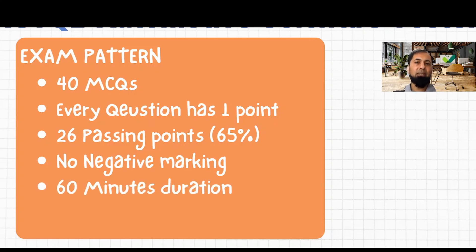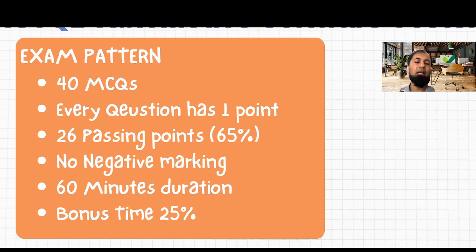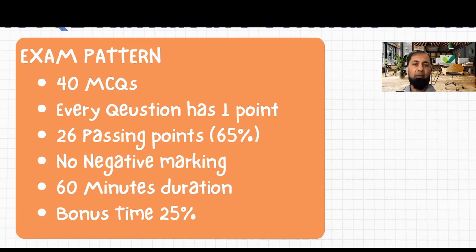The duration of the examination is 60 minutes, so you have to solve 40 MCQs in 60 minutes. However, there is a bonus 25% extra time if you select an examination language other than your native language. In my case, I got this bonus because I am not a native English speaker, giving me 75 minutes for the 40 questions. You can request this bonus time by providing proof that the exam language is not your native language.